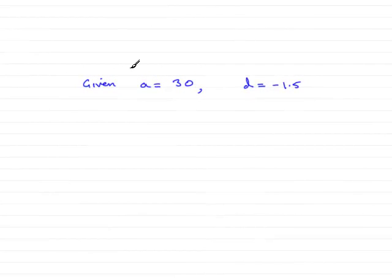In this question we're given an arithmetic sequence where the first term a is 30 and the common difference is minus 1.5, and we're asked to find the value of the 25th term.